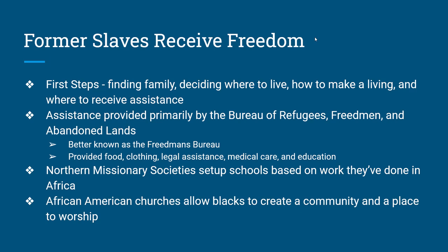Even from the perspective of the soon-to-be former slaves, there was no plan either. They had to decide: are we going to stay on the land we're living on, move to a city, stay in the North, stay in the South? How are we going to find our families? Because families were often torn apart. For former slaves, most of the help came from an organization — part of the government — known as the Freedmen's Bureau.